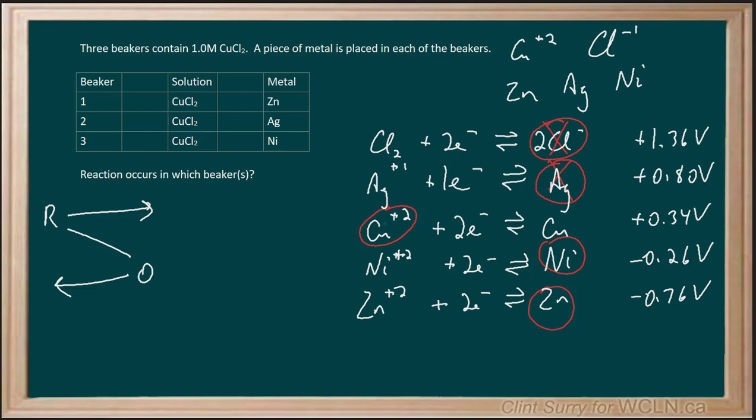I do see copper plus 2 ion above nickel. That's giving us the right direction for this to work. I also have copper above the zinc, also giving us the right direction for this to work. So I would say that the zinc beaker and the nickel beaker would show a reaction.